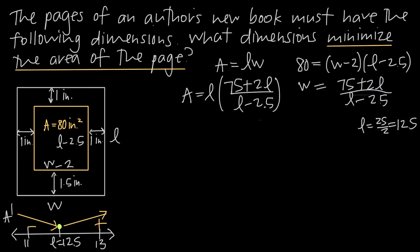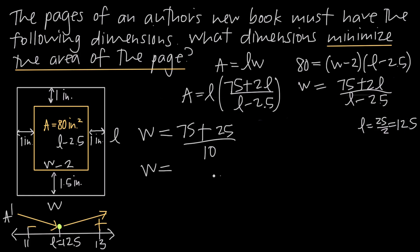Remember, our last step with an applied optimization problem is always to go back to the problem and make sure we're answering the question that was actually asked. We've been asked to find the dimensions that minimize the area of the page, so we need both l and w. We know l equals 12.5, and using our earlier equation: w equals (75 plus 2 times 12.5) divided by (12.5 minus 2.5) equals (75 plus 25) divided by 10 equals 100 divided by 10, so w equals 10.